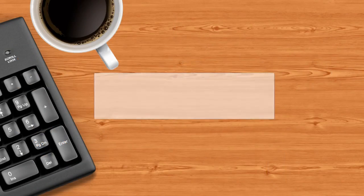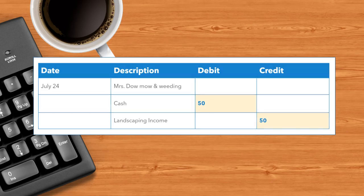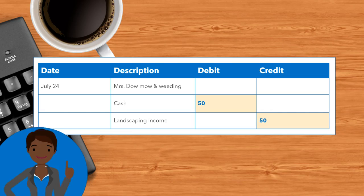Remember the journal entry for Mrs. Dow? Here you can see it's really two T-charts combined. So if you can fill in a T-chart, you can fill in a journal entry. Practice time!